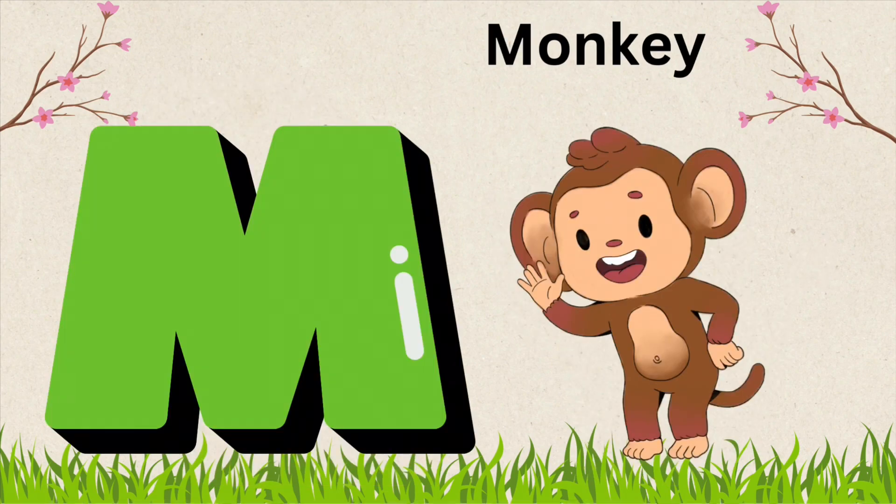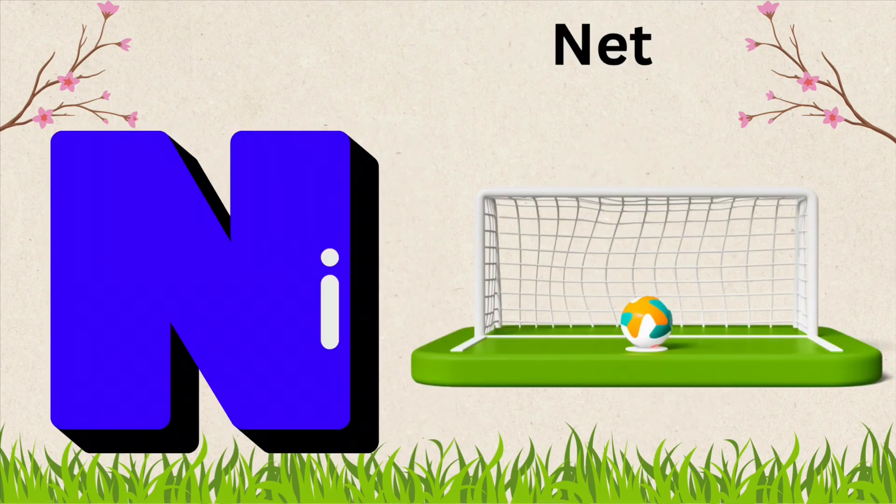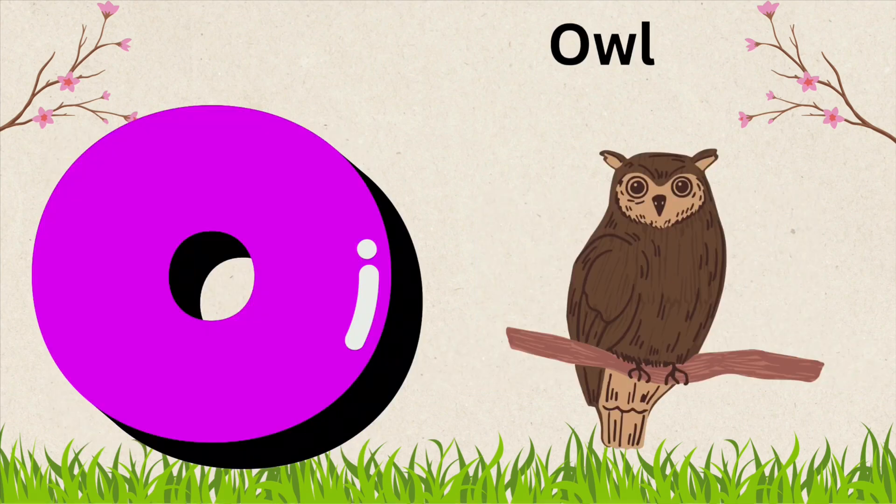M is for Monkey. M, O, N, K, E, Y, Monkey. N is for Net. N, E, T, Net. O is for Owl. O, W, L, Owl.